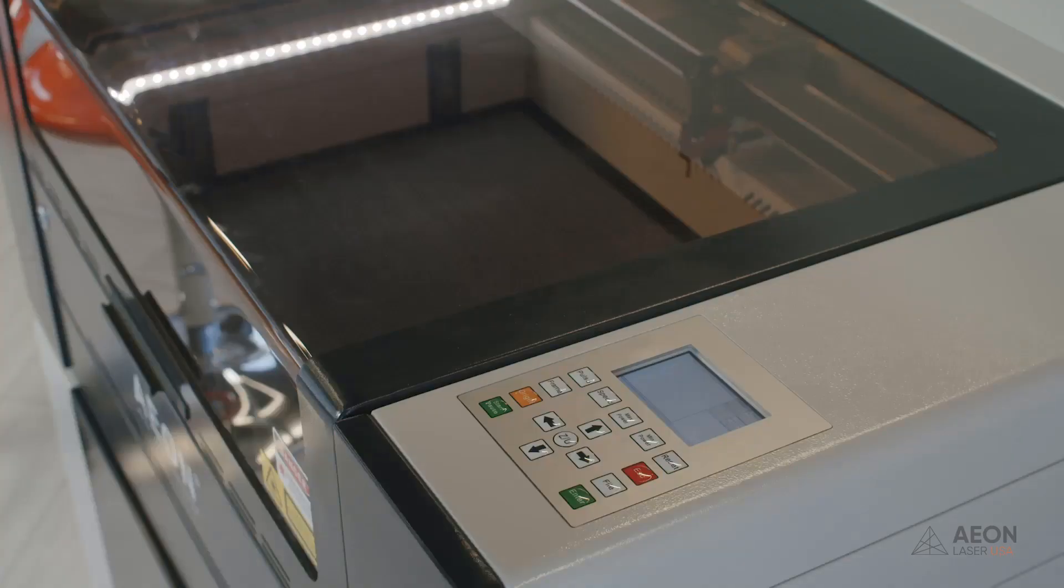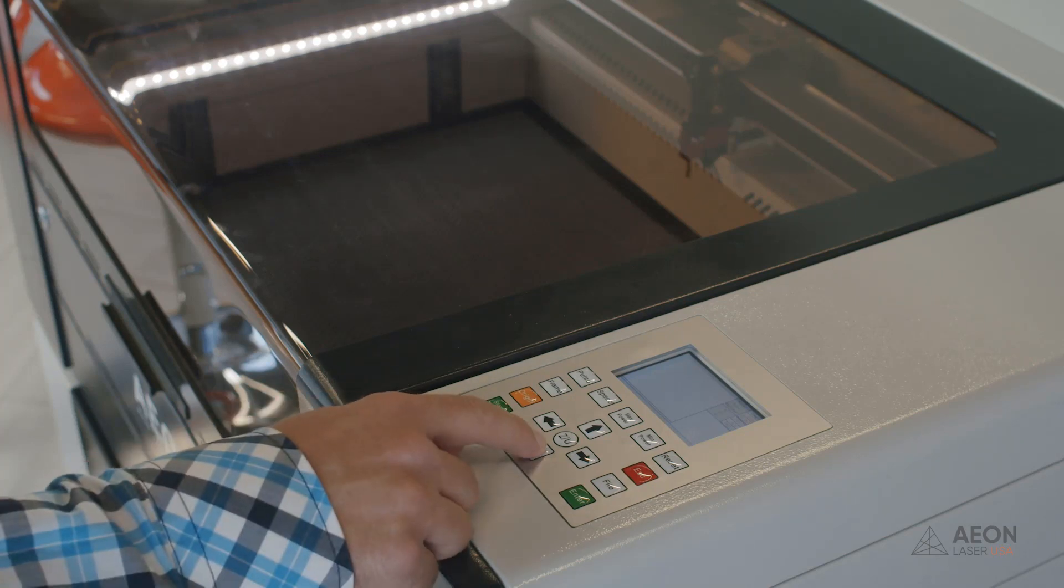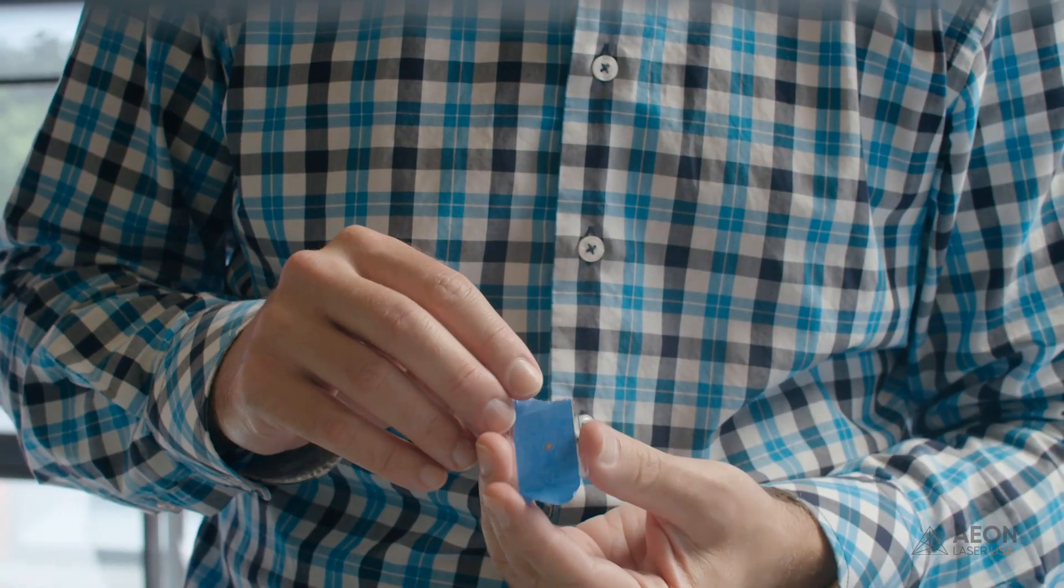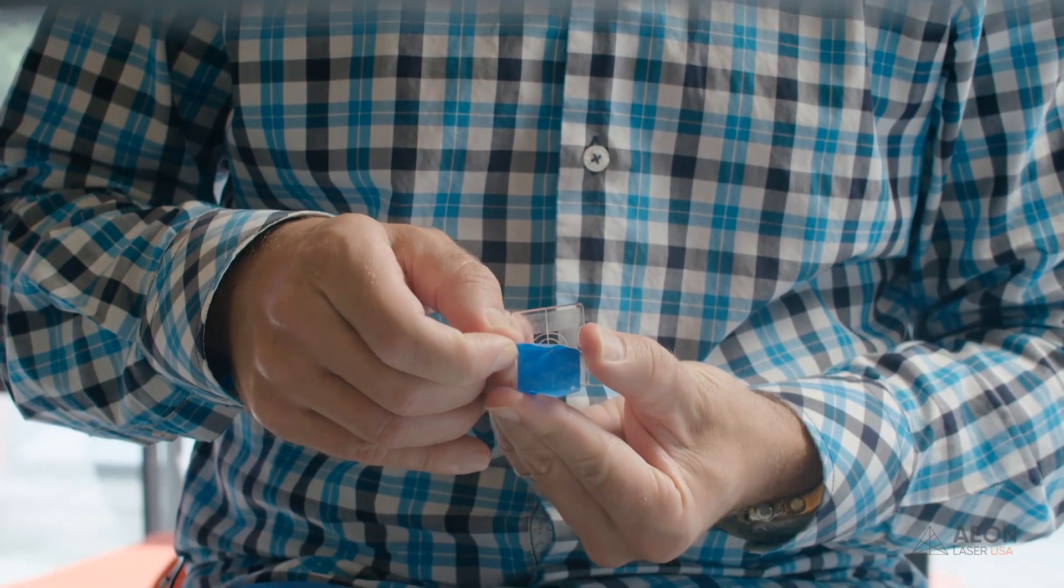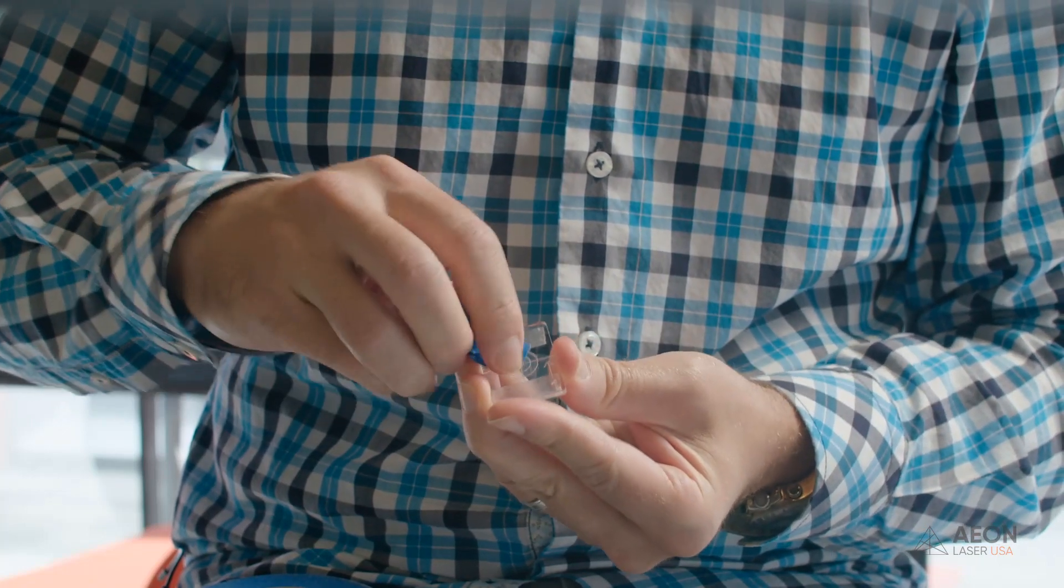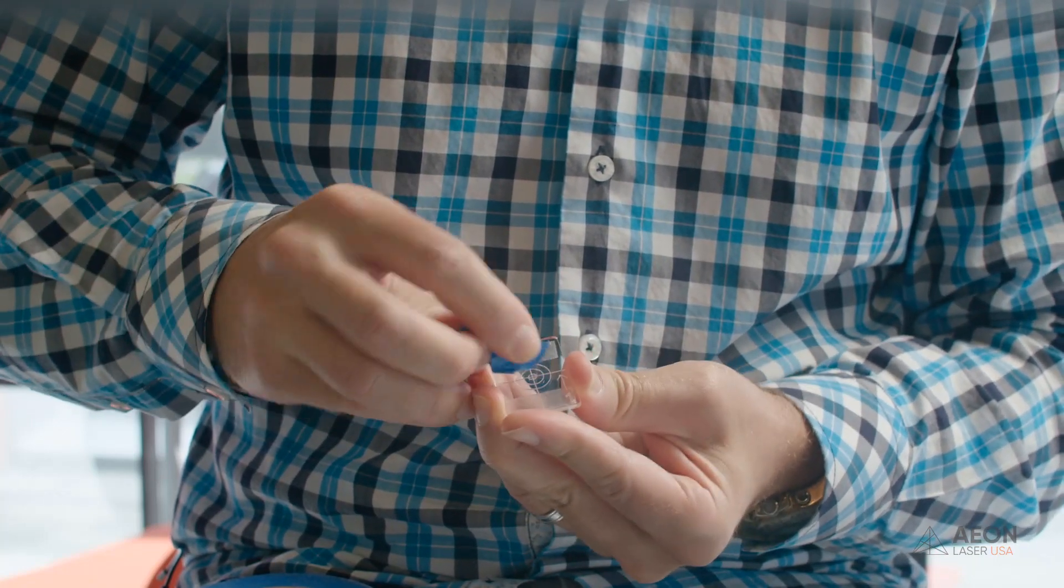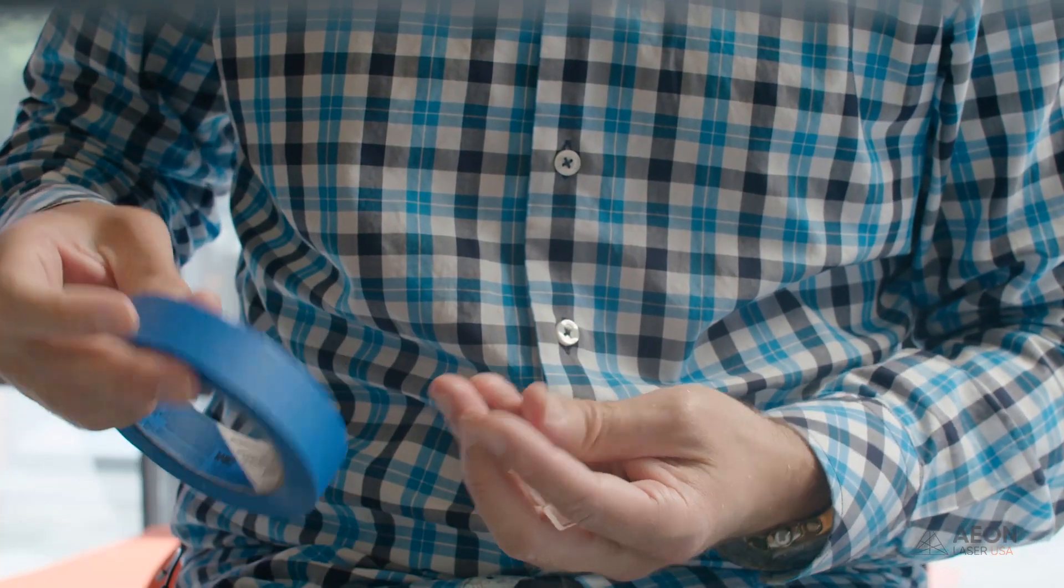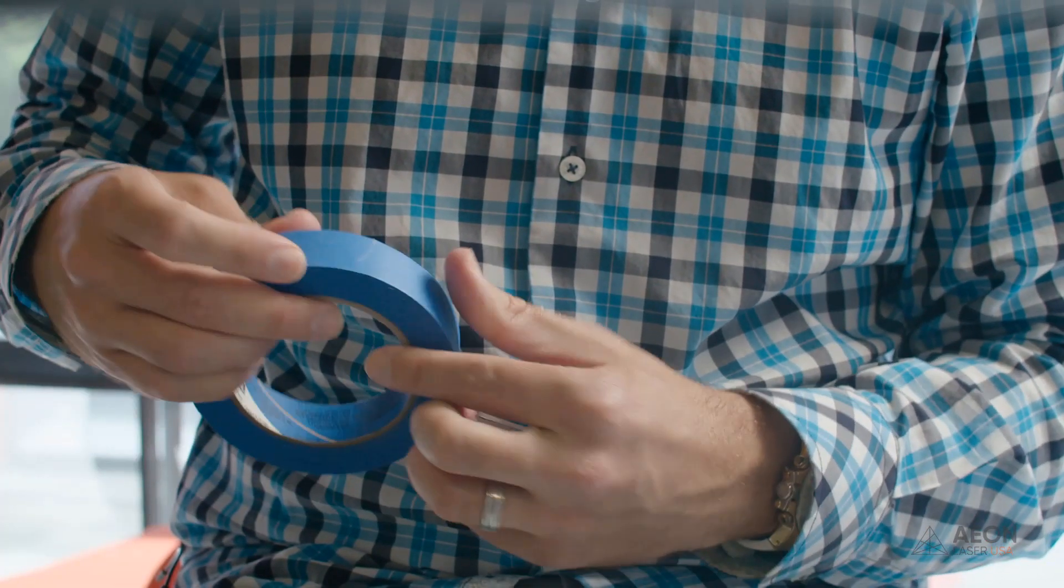So now we're going to move the gantry all the way to the front of the machine by pressing the down arrow on the keypad. So now we've got our first burn mark. We're going to remove the piece of tape. Make sure we take any other little remnants of the first piece of tape off of there. And we're going to put a brand new piece of tape on the target.